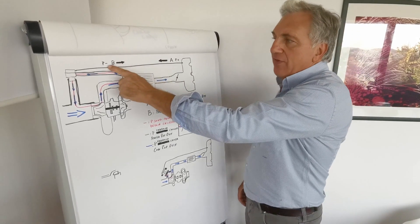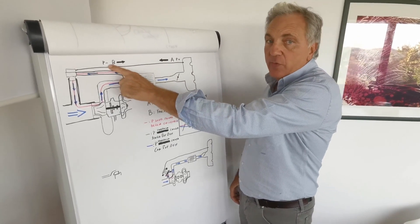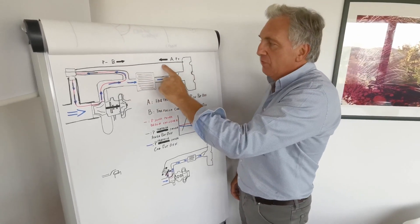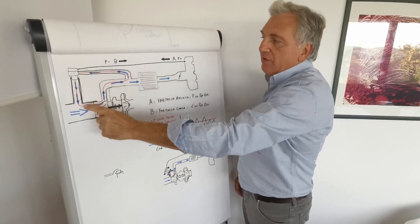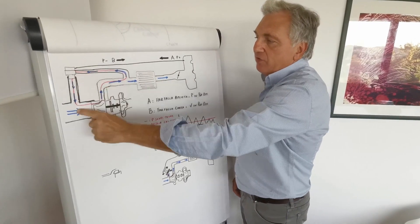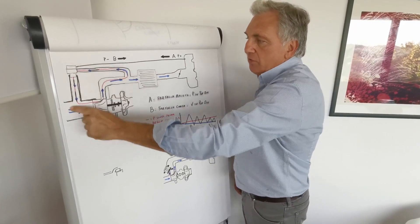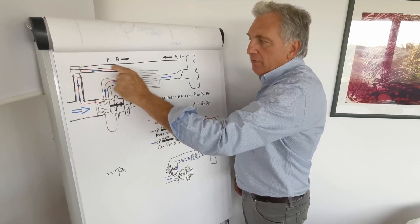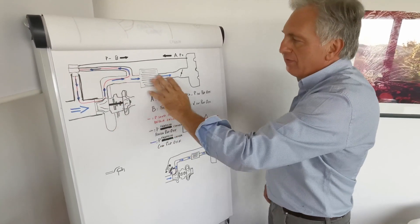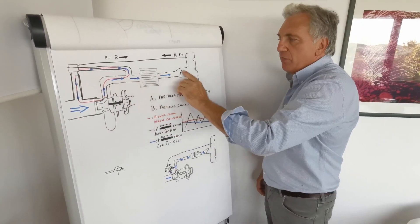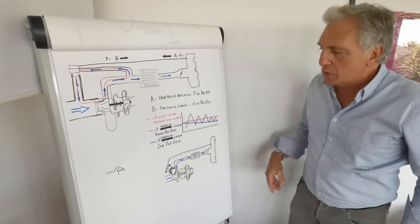The negative pressure causes the valve to open. Taking the butterfly into account, this creates a closed loop, and consequently I no longer have any pressure within the circuit.